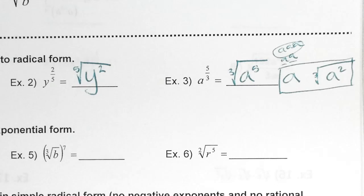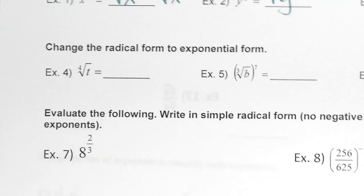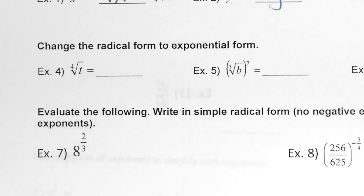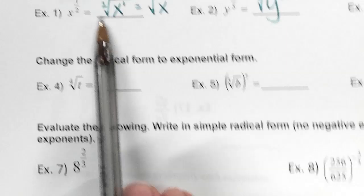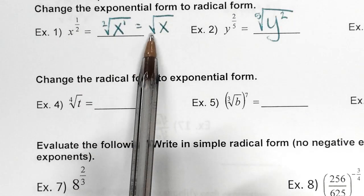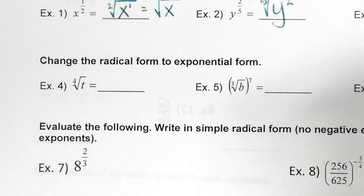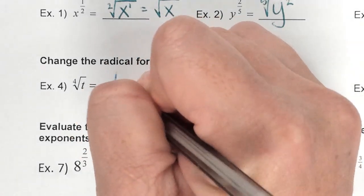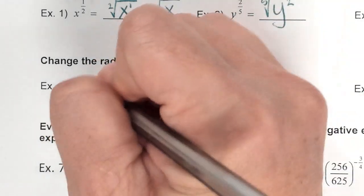Look at example four — it says change the radical form to exponential form. So now I'm going backwards. What is my root? Four. And what would my exponent be if there is no exponent? One. So it's just t to the one-fourth.